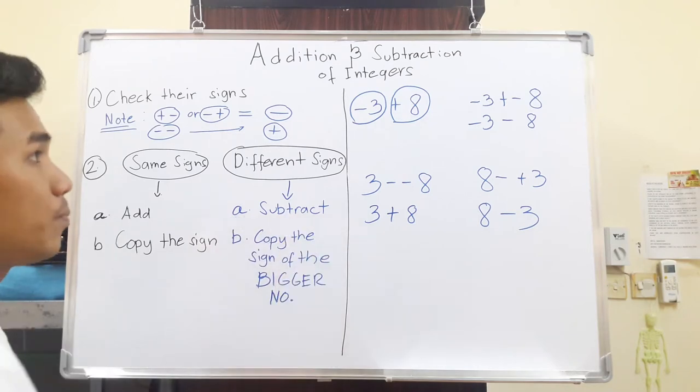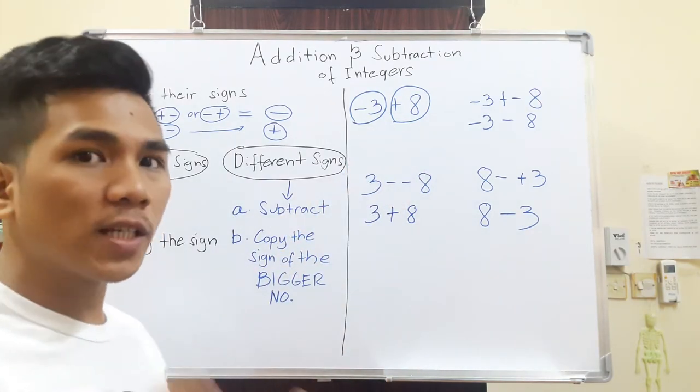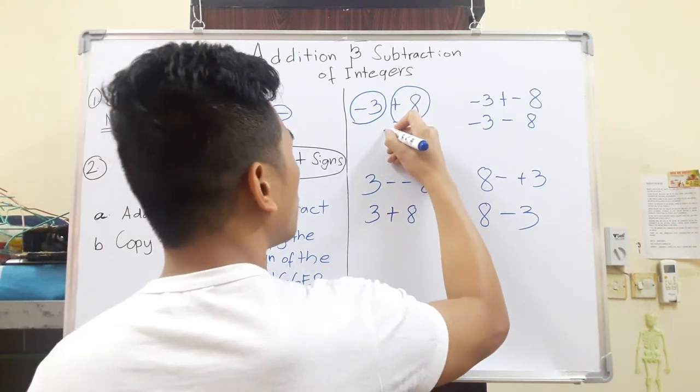Number one, subtract. When you say subtract, just normally subtract 8 and 3. Ignore the signs for now. So what is 8-3? 8-3 is 5. Just subtract normally.